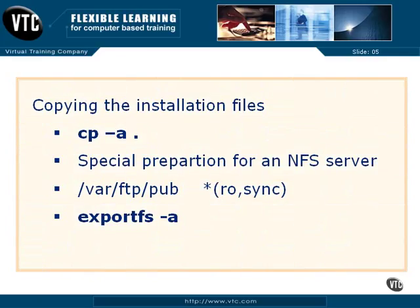What you need to add to the /etc/exports file is a directive that includes the directory such as /var/ftp/pub, the asterisk which shares with all connected systems, in read-only mode, with synchronous reads. And you can activate the share with the exportfs -a command.